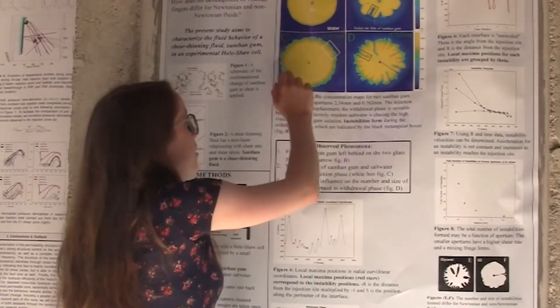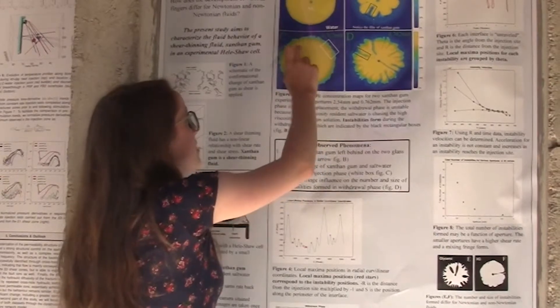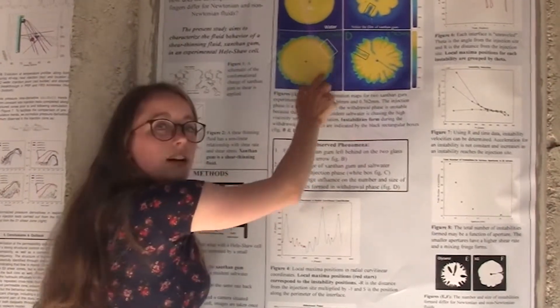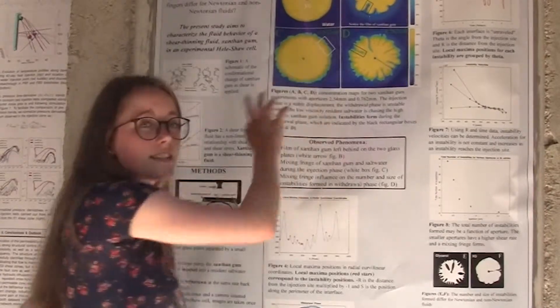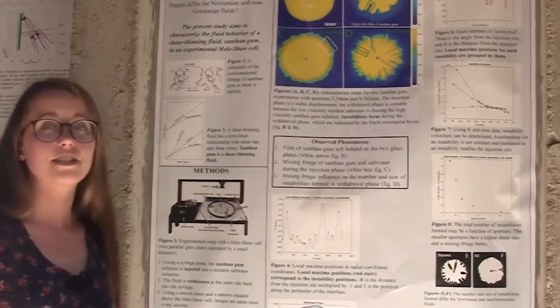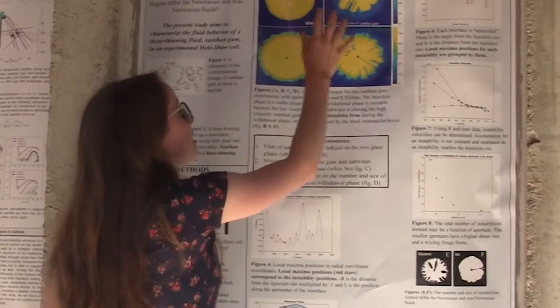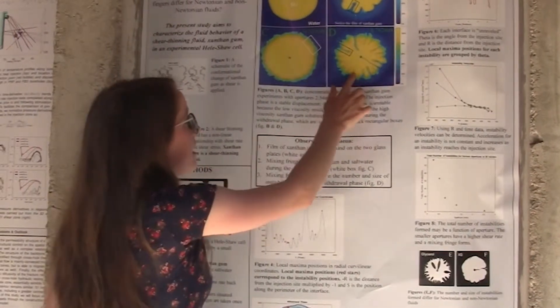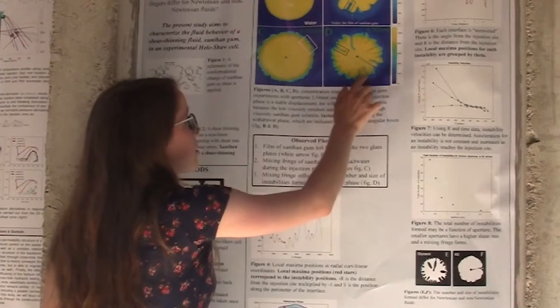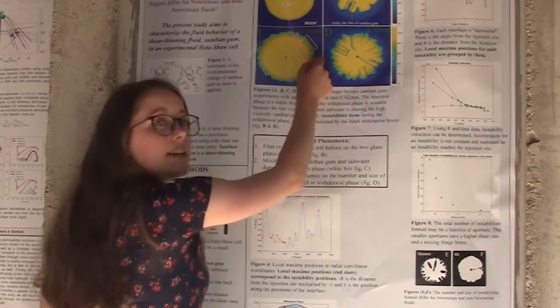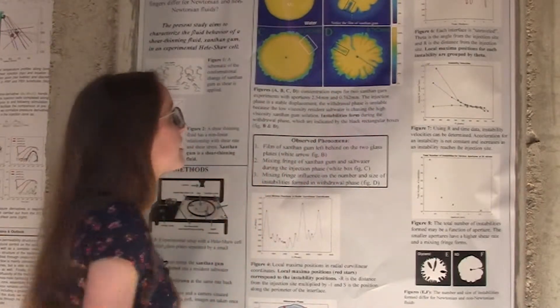And since we have a smaller aperture, there's more shear that's experienced, and we have this mixing zone that's developing around the fluid. And this mixing fringe has not been observed before, so it's an interesting phenomenon that we're trying to quantify. With this mixing zone, it directly impacts the withdrawal phase because we have more instabilities forming since the interface has more irregularities.